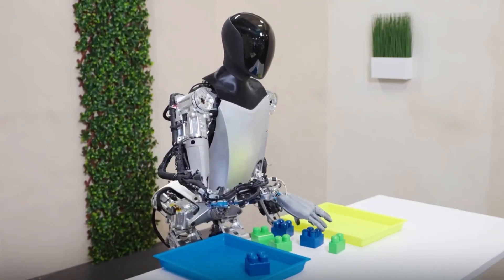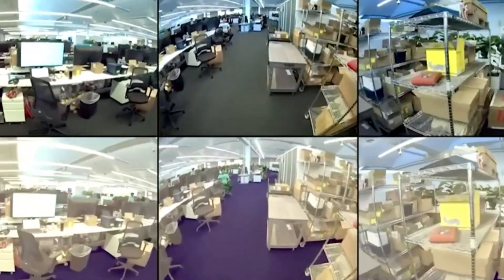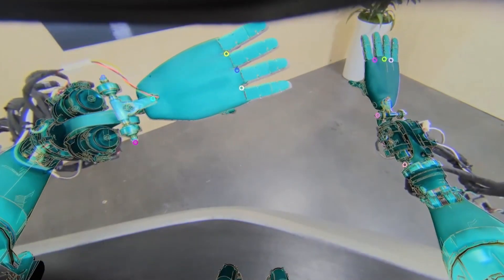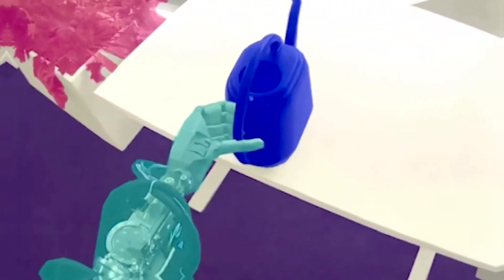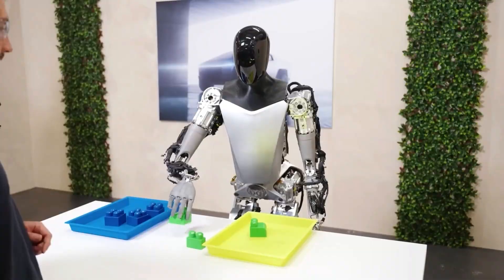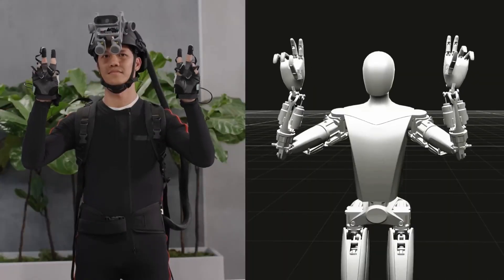The input to this neural net is the video feed from the cameras on Optimus' head and hands. The output of the neural net is the control signals for Optimus' joints and actuators. The neural net learns to sort objects by color by observing human demonstrations and receiving feedback from humans or sensors.